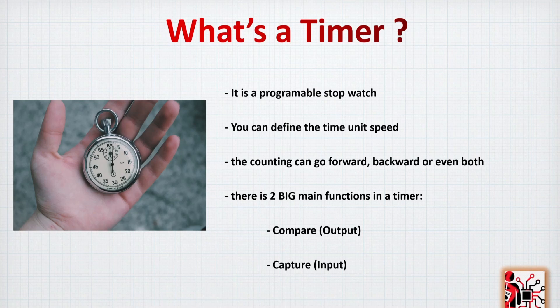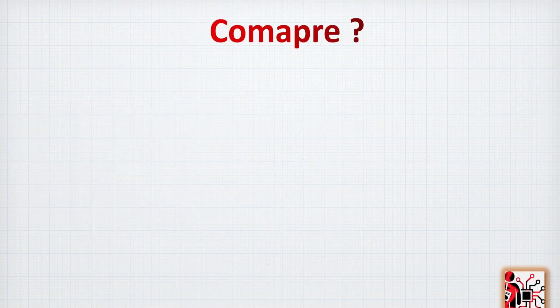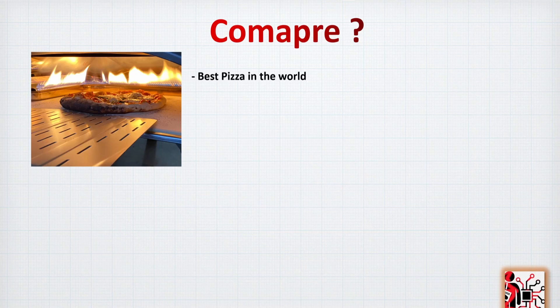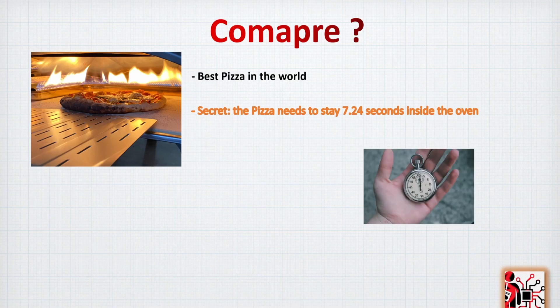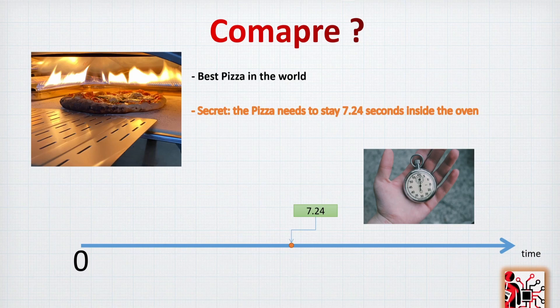So let's take a look a little bit more on the compare function. Nothing better than a real-life example. To compare, let's say you are a chef and you cook a pizza, the best pizza in the world. Your secret is the pizza needs to stay in the oven for 7.24 seconds. That's the secret, you have the best pizza in the world. To do so, you will need to use your timer and start counting.